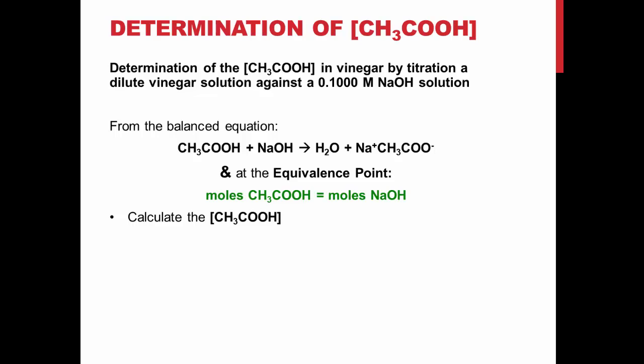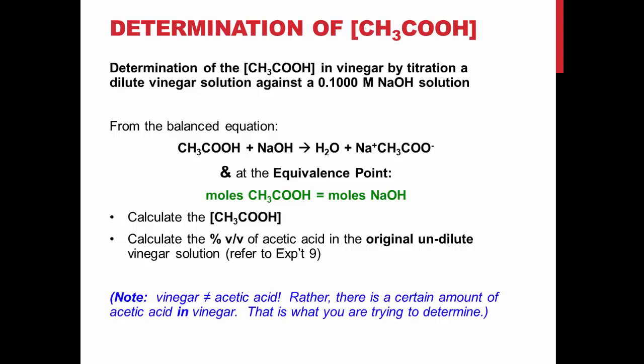Therefore, using the volume of sodium hydroxide used during the titration, the concentration of acetic acid can be calculated, as you have seen in previous labs. The percent by volume of acetic acid in vinegar can also be calculated, as you have seen in experiment 9. Remember that vinegar is not entirely acetic acid, so the volume of acetic acid will be different than the volume of vinegar used.